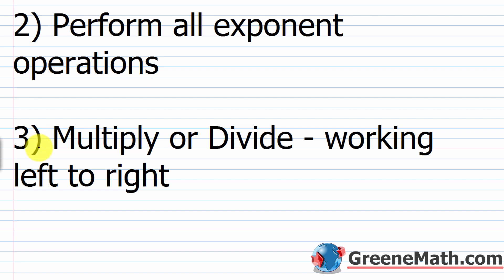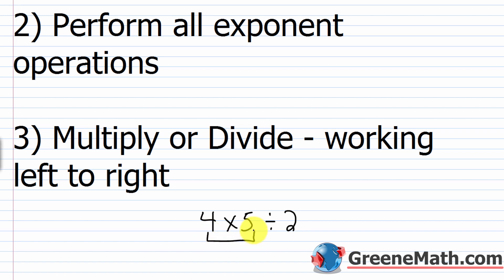Third priority is multiplication and division. A lot of students get confused with this — you want to multiply or divide working left to right. Multiplication does not come before division, and division does not come before multiplication. They are on the same level; you do them from left to right. For example, with 4 times 5 divided by 2, you multiply first: 4 times 5 is 20, then divide by 2, giving us 10.